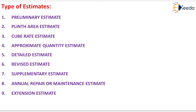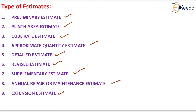There are various types of estimates: preliminary estimate, plinth area estimate, cube rate estimate, approximate quantity estimate, detailed estimate, revised estimate, supplementary estimate, annual repair or maintenance estimate, and extension estimate. We will now see each type of estimate in detail, starting with the preliminary estimate.